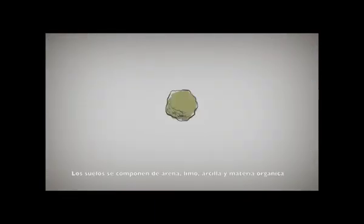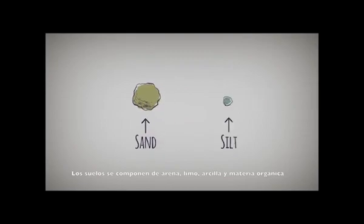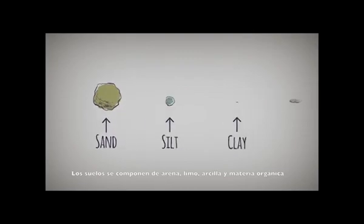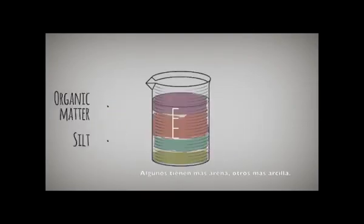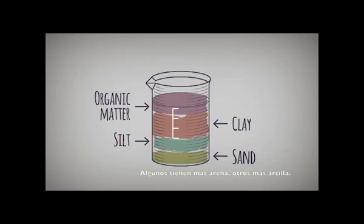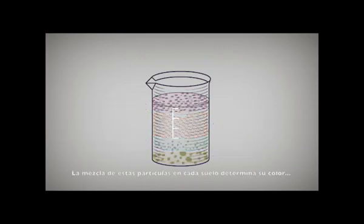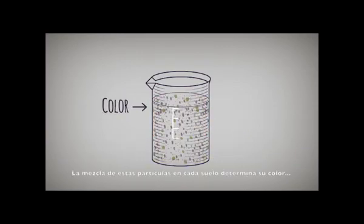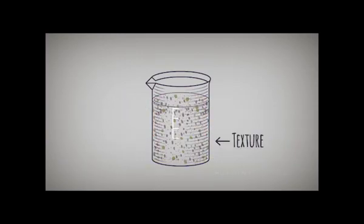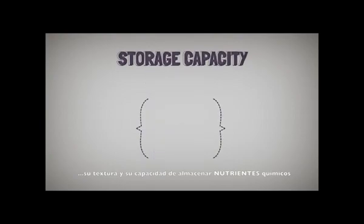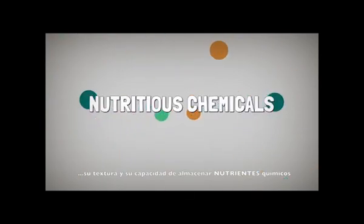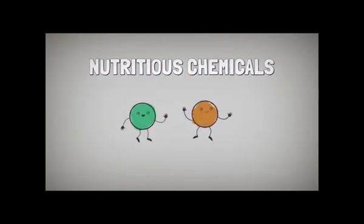Soils are composed of sand, silt, clay, and organic matter. Some have more sand, others more clay. Each soil's unique blend determines its color, texture, and storage capacity for nutritious chemicals.